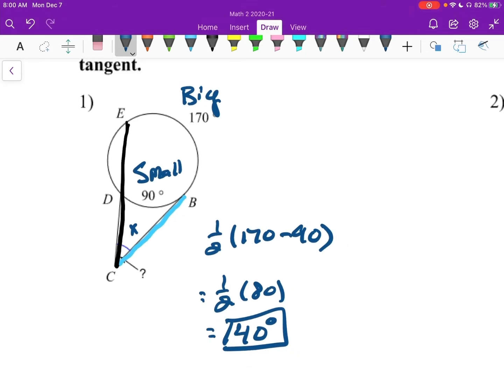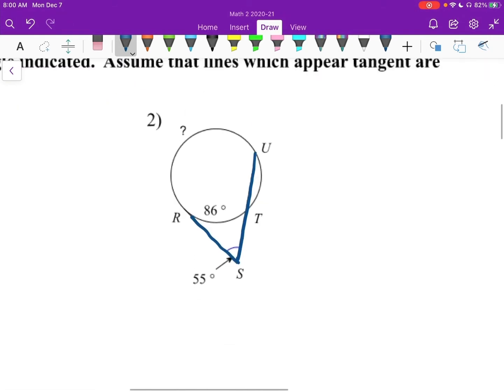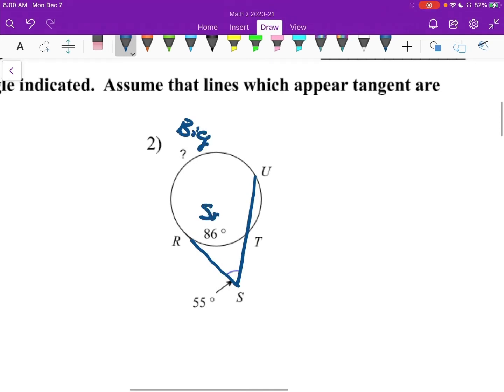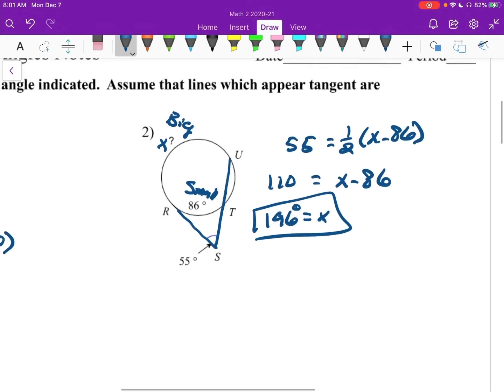All right. Not too crazy once you know the formula. Number 2. Again, we've got a tangent and a secant. Here's the big, small. And this time our big is going to be our X. So we could say, well, 55 equals, 55 is the angle, one half X minus 86. So 110 is X minus 86. And whenever I add in 86, so 110 plus 86 is 196. And we're talking about degrees.